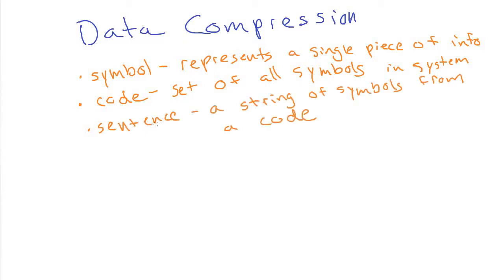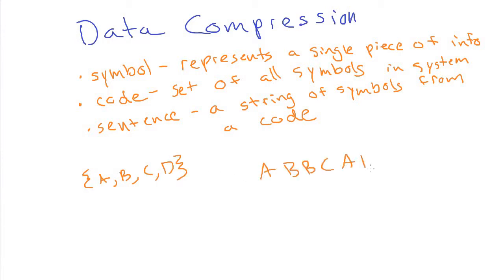And then lastly, we have a sentence, which is a string of symbols from a code. So if we have the same code consisting of symbols A, B, C, and D, then A, B, B, C, A, D, A is a sentence of this code. Hopefully that makes sense — it's just a little terminology so that we can start talking about this.